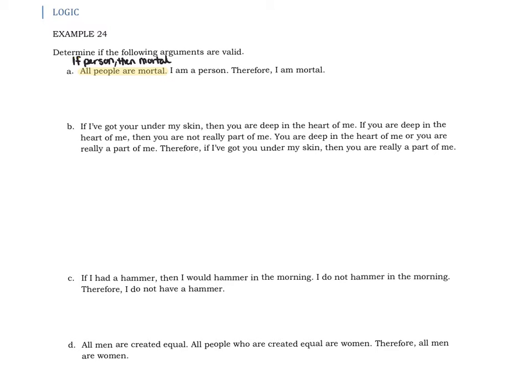That will help you set up an argument. For this one, I'm going to choose to see if this is one of our valid forms of arguments or maybe a fallacy. So if you are a person, then you are mortal. I am a person, so P is true. Therefore, I am mortal — Q. This is a valid argument. This happens to be the law of detachment, which we just went over in the very last example.